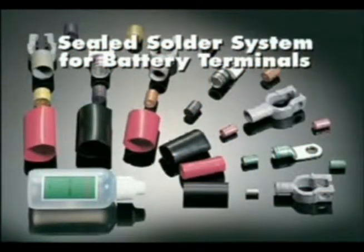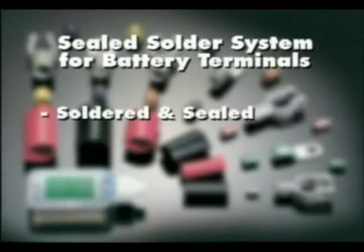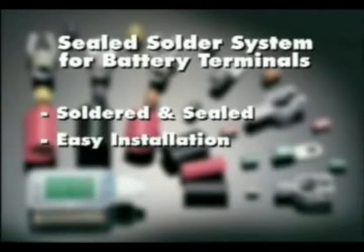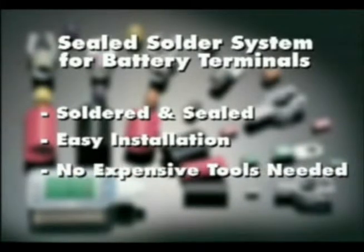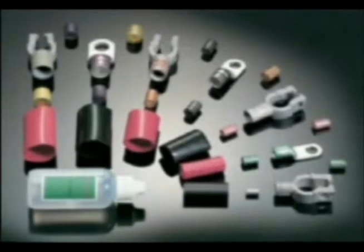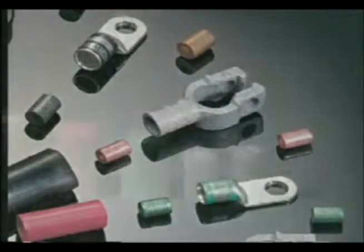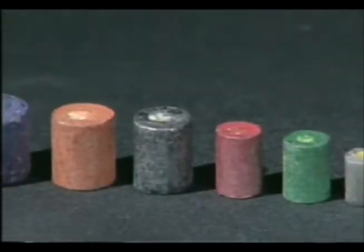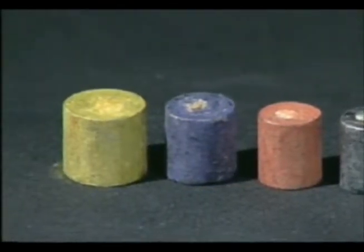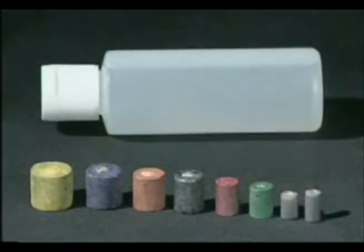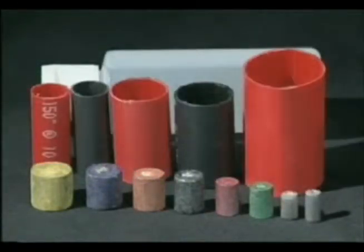The sealed solder system for battery terminals allows the user to easily solder and seal cable connections, eliminating the need for expensive crimping tools. Any style of closed-end connectors may be used. The sealed solder system for battery terminals consists of pre-sized solder pellets, no clean liquid flux, and color-coded adhesive lined heat shrink tubing.